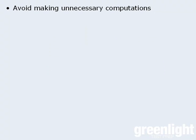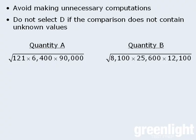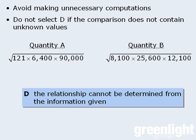OK, the next tip to consider is, do not select answer choice D if the comparison does not contain any unknown values. For example, in this question, we can see that both quantities must evaluate to be specific numbers. Now answer choice D says that the relationship cannot be determined from the given information.